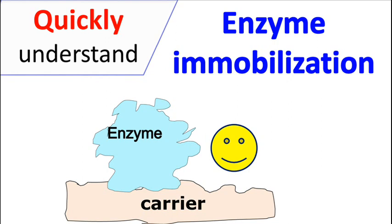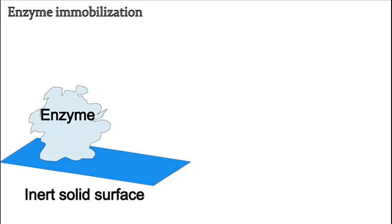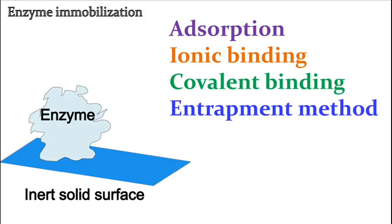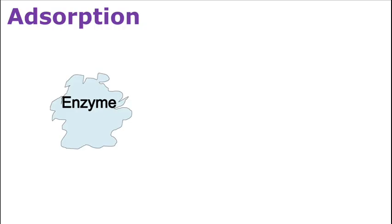Let's talk about enzyme immobilization. The phenomenon in which an enzyme is attached to an inert insoluble material is called enzyme immobilization. There are several ways in which enzyme immobilization can be done. These include adsorption, ionic binding, covalent binding, and entrapment method. Let's talk about adsorption. This method involves binding of enzymes on an inert carrier.